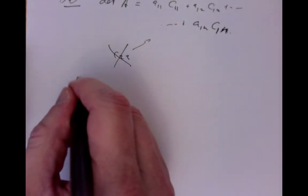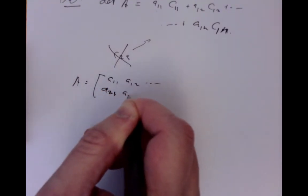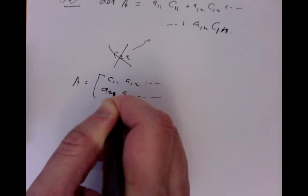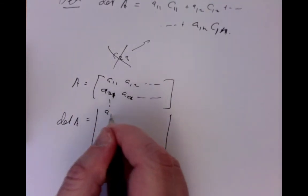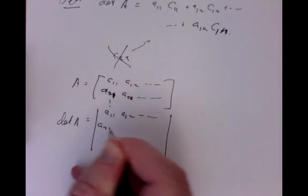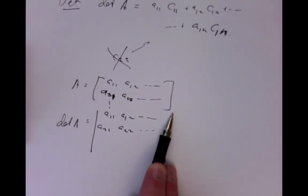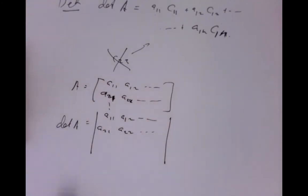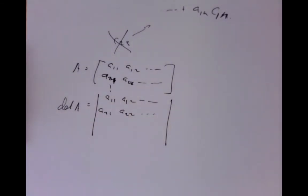The notation frequently used is that if A is a matrix, we often write the determinant of A as the same matrix but with absolute-value-type bars on it instead of square brackets. I've never been very fond of this notation because it gets easily confused with absolute values, but it is often used. When we put straight bars, it means we're talking about the number that is the determinant of this matrix.